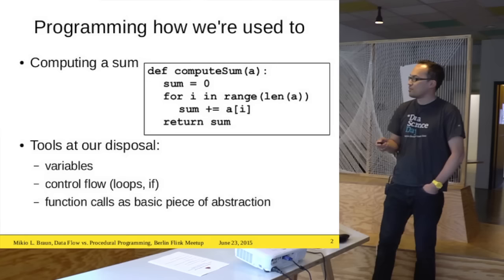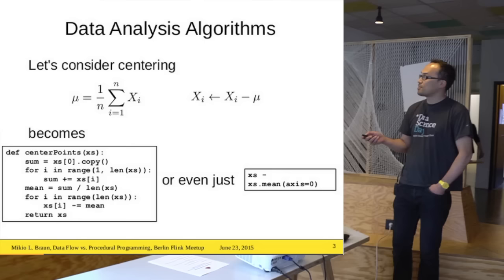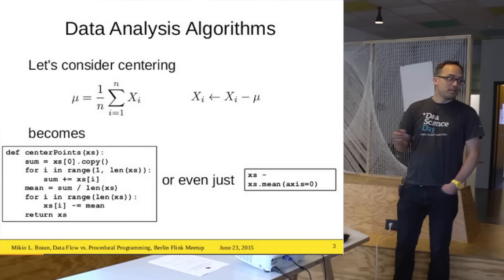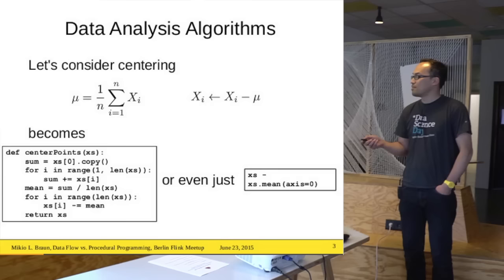When it comes to data analysis, what you implement is often some piece of linear algebra. For example, if you want to center your data: the xi are vectors, you first compute the mean of the data — sum them up and divide by the number of elements — then replace each element by that vector minus the mean. Very simple.